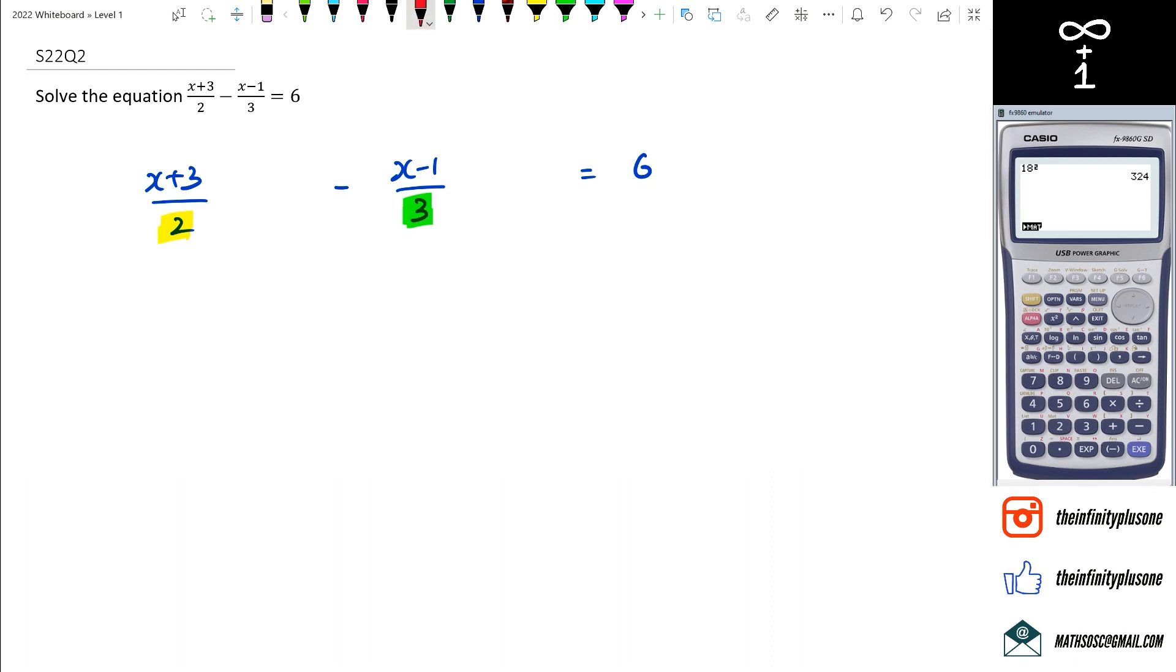Which means I need to multiply the denominator by 3 and also the numerator by 3. And as for the right hand side fraction, I've got to multiply the denominator by 2 and the numerator by 2.